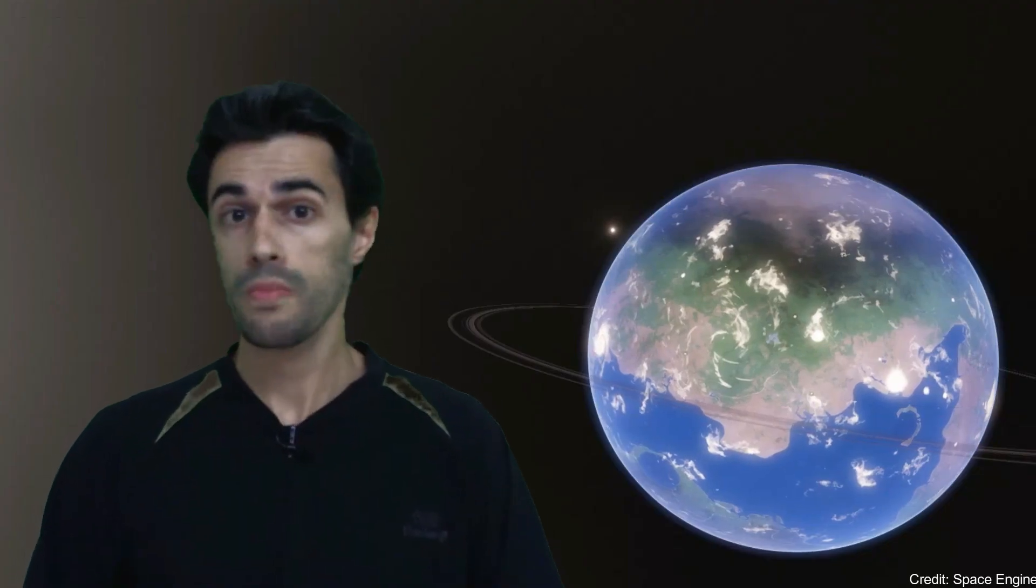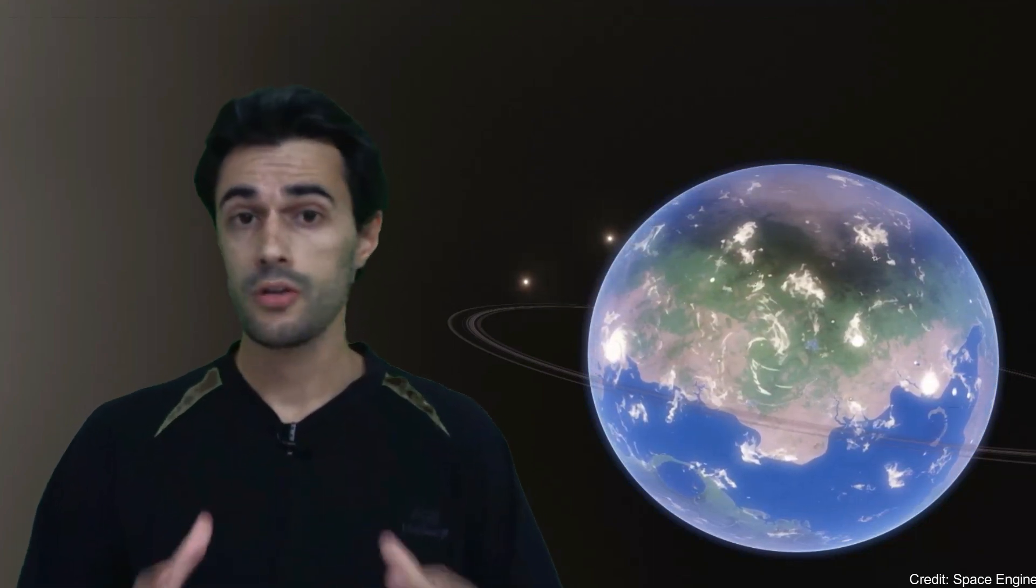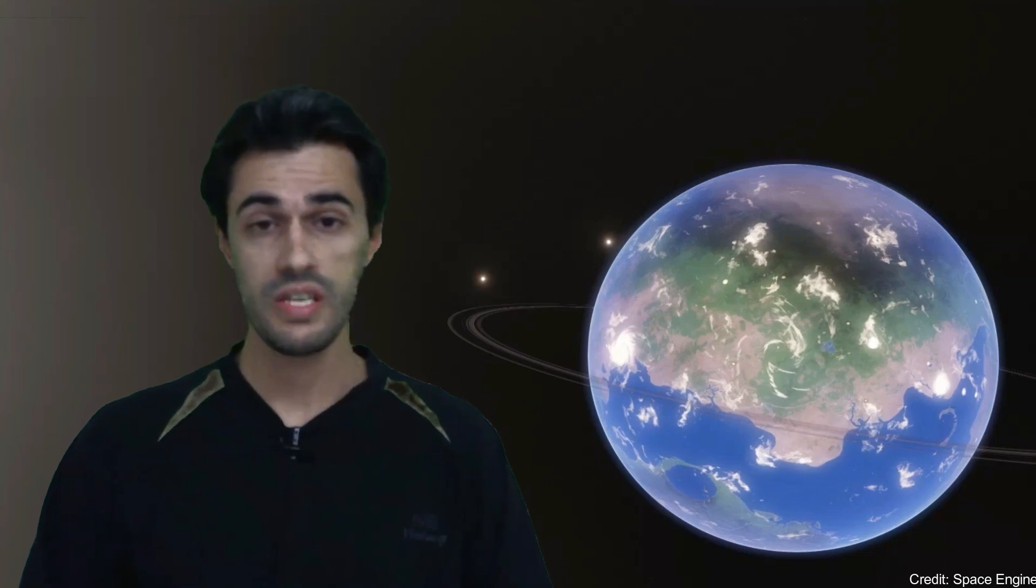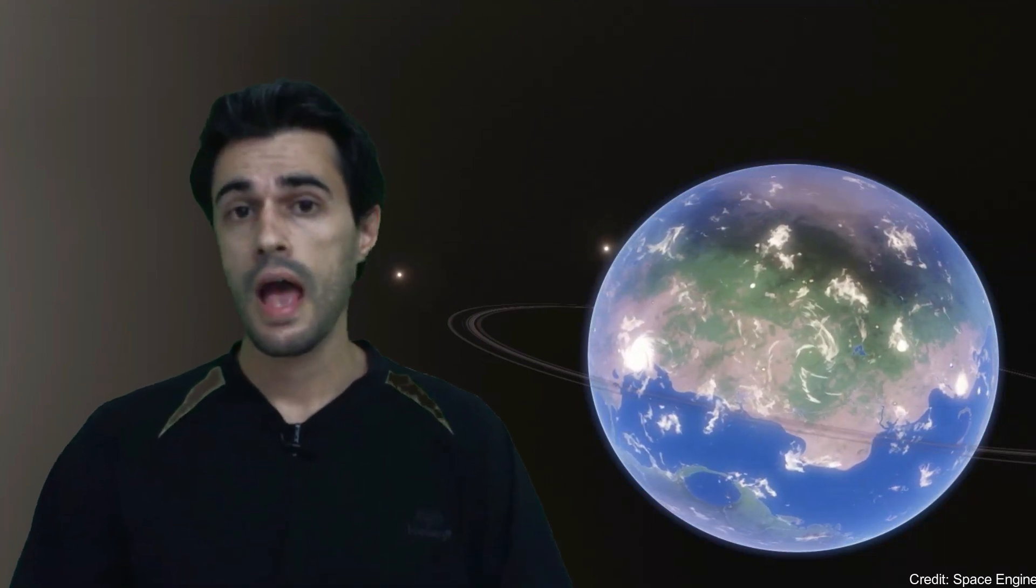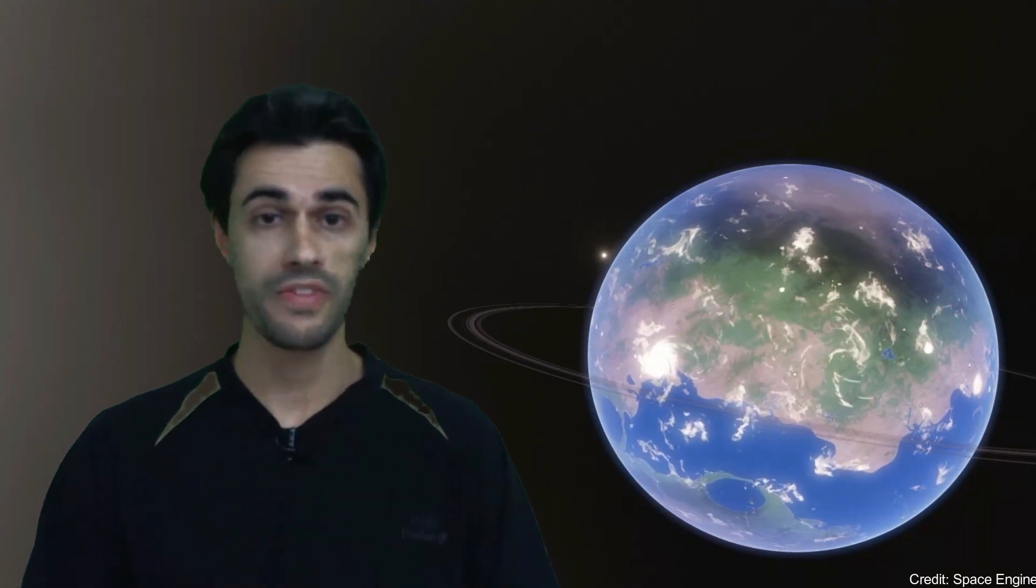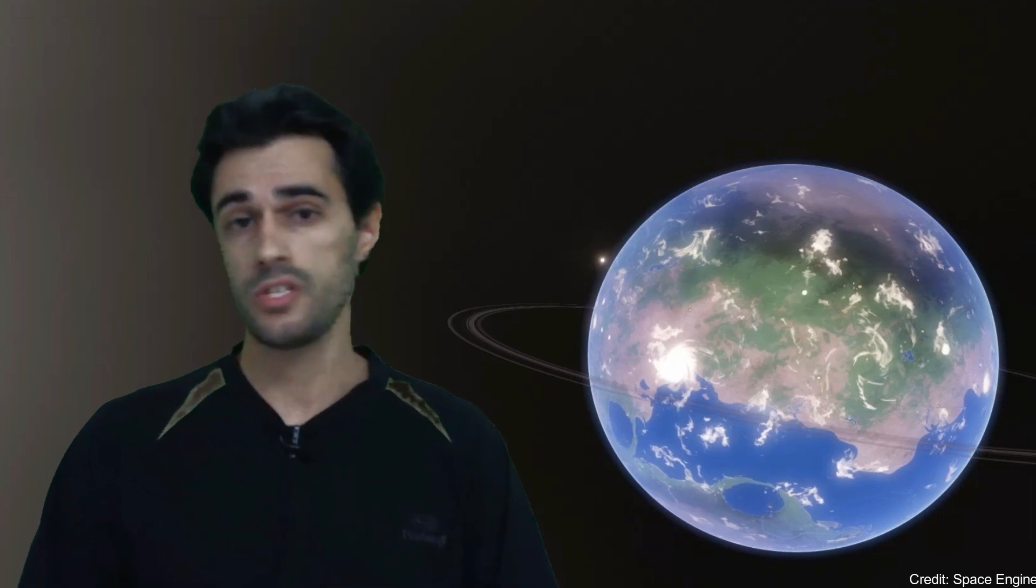Teagarden b orbits the red dwarf star Teagarden, 12 light years away. The exoplanet is 95% similar to Earth. It has an orbital period of 5 days, a minimum mass and average radius 40% higher than Earth, and an equilibrium temperature of 9 degrees more.